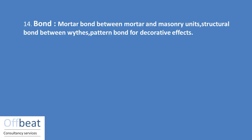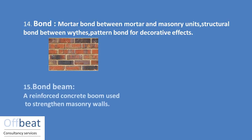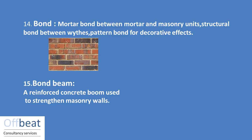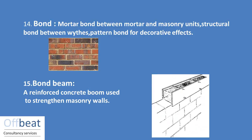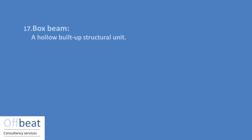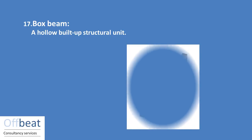Bond is a mortar bond between mortar and the masonry units. These masonry units are joined with the mortar bonds as visible in this picture. Bond beam is a reinforced concrete beam which is used to extend the masonry wall. Box beam is a hollow built-up structural unit.